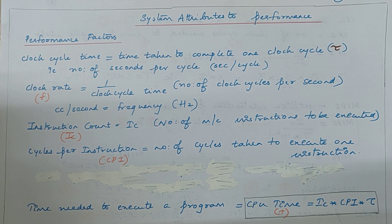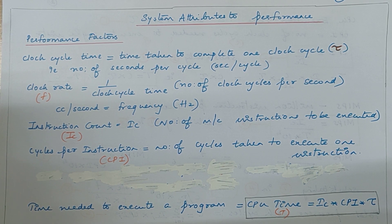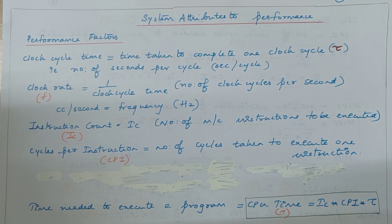In order to execute a program, we need to know the processor time taken to execute that particular program. To find out, we will need to understand various terms associated with this performance. These performance factors include clock cycle time, clock rate, execution time, and so on.